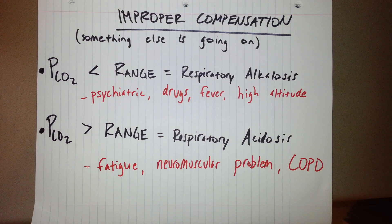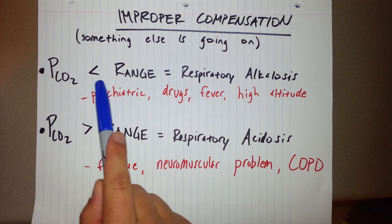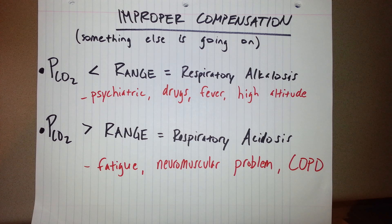Now what could be going on if you have improper compensation? It could be a lot of different things. But basically there's some other ongoing process besides just that initial insult of diarrhea causing the metabolic acidosis. If the partial pressure of carbon dioxide is below the range, which is in our case, you have an ongoing primary respiratory alkalosis. So you have a metabolic acidosis and a respiratory alkalosis.